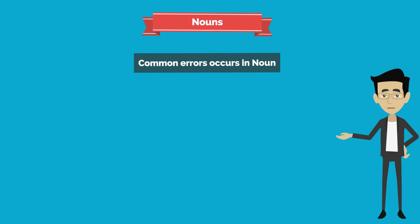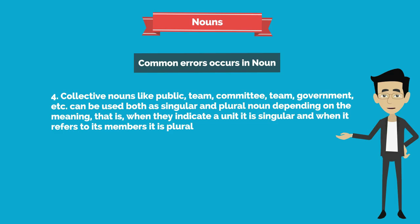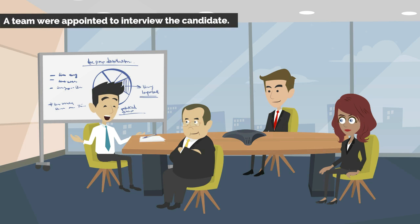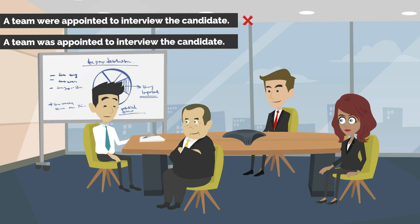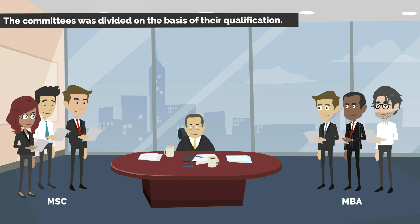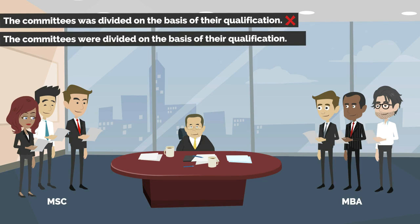Fourth common error: collective nouns like public, team, committee, government, etc. can be used both as singular and plural depending on meaning. When they indicate a unit, they are singular; when referring to members, they are plural. Incorrect: 'A team were appointed to interview the candidate.' Correct: 'A team was appointed to interview the candidate.' Incorrect: 'The committees was divided on the basis of their qualification.' Correct: 'The committees were divided on the basis of their qualification.'